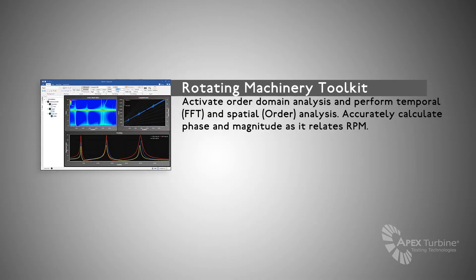The Rotating Machinery Toolkit provides users with order domain analysis features and the ability to perform temporal or FFT and spatial or order analysis. Users can easily and accurately calculate phase and magnitude as it relates to RPM with the RM Toolkit.